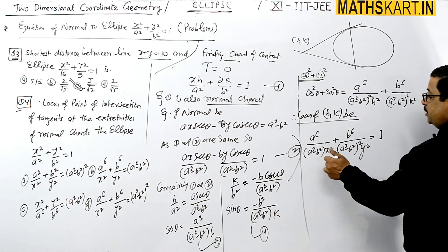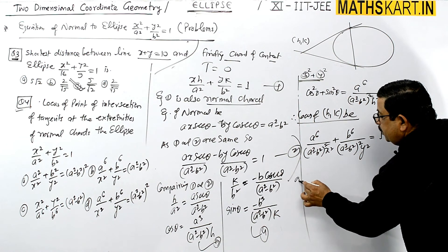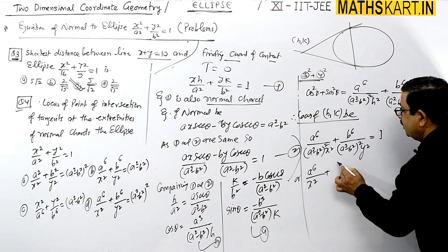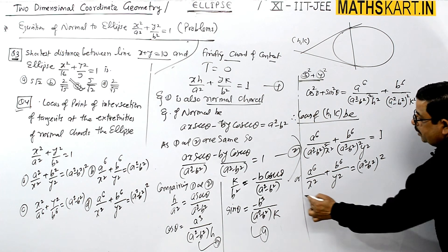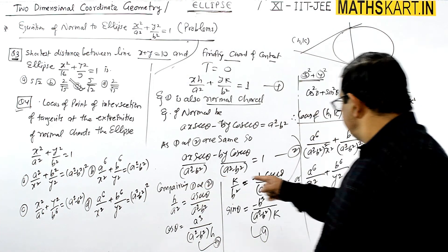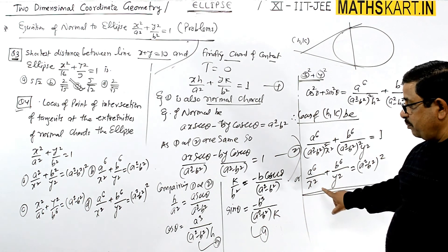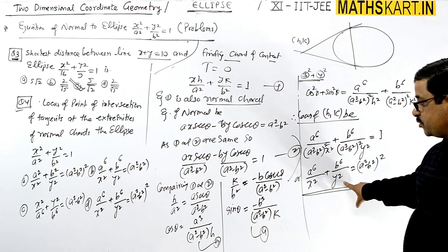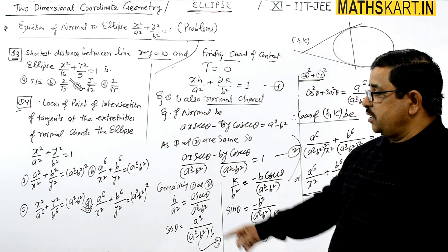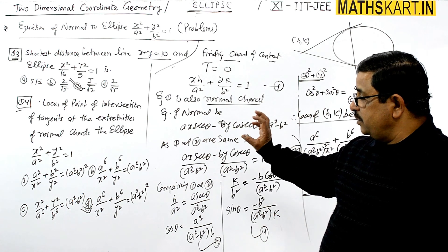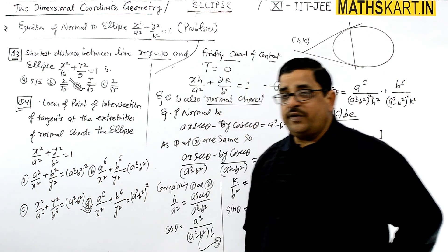Checking the options: option A has a² and b² instead of a⁶ and b⁶ — incorrect. Option B is missing the square on the right side — incorrect. Option D matches exactly: a⁶/x² + b⁶/y² = (a²−b²)². So option D is correct.